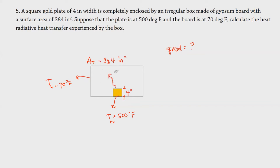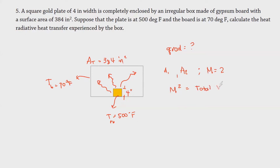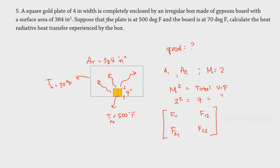This plate will emit radiation since it has a very high temperature. Since this is a two-zone enclosure, we have two surfaces: Area 1 and Area 2, so M equals 2. To find the total number of view factors, we square M: 2 squared equals 4. So there are four total view factors.